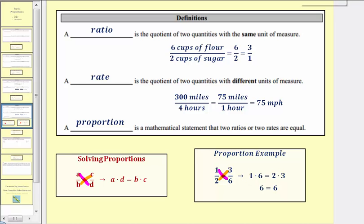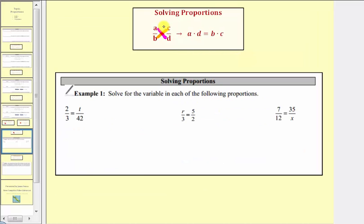Let's look at some examples. In example one, we're asked to solve for the variable in each of the following proportions. So notice in the proportion, we have three known values and one unknown value. So we can cross multiply, form an equation, and solve for t.